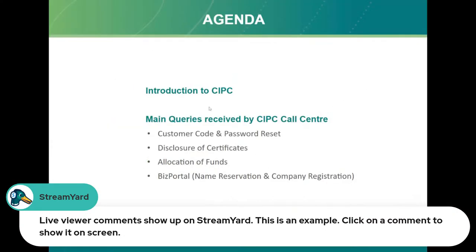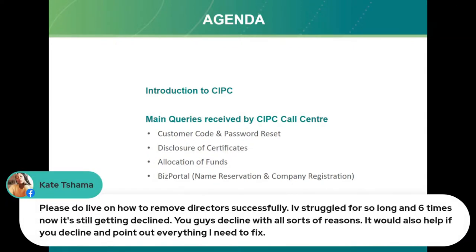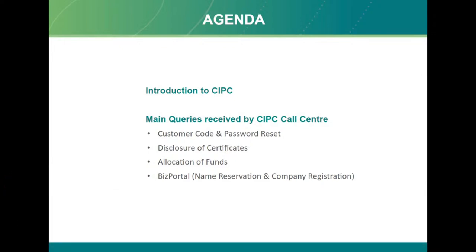The agenda covers the main queries received by the call centre, which includes customer code and password reset, and also disclosures or certificates - for example the registration certificate, disclosure certificate for city rent, the MOI incorporation documents. We also look at a challenge where customers deposit funds into the CIPC bank account but it's not allocated to their customer code.